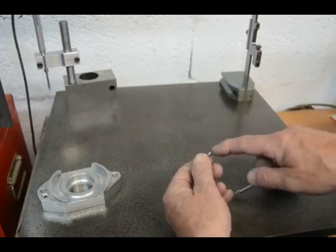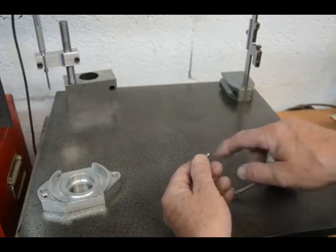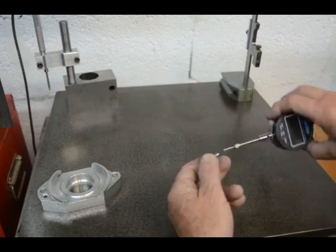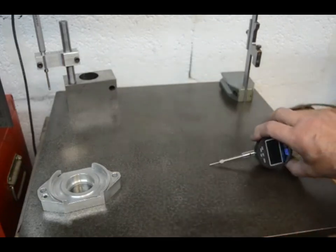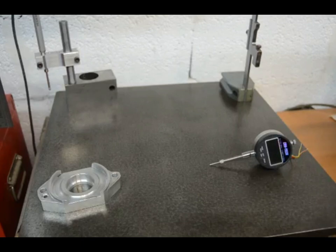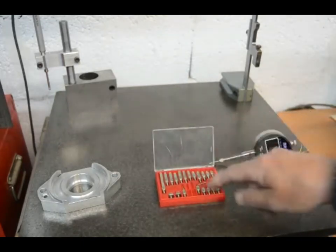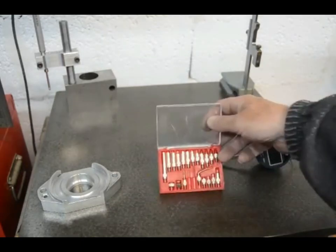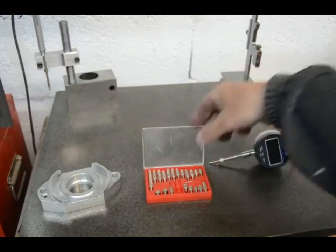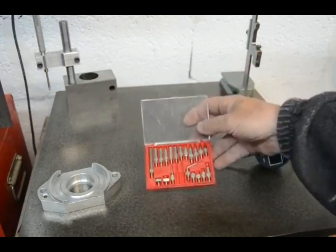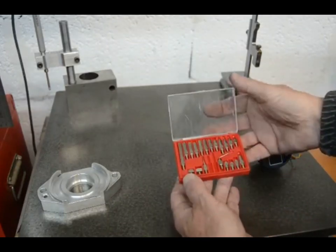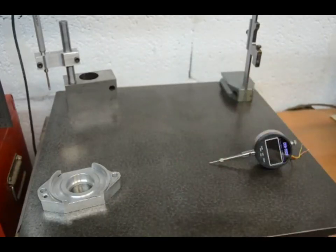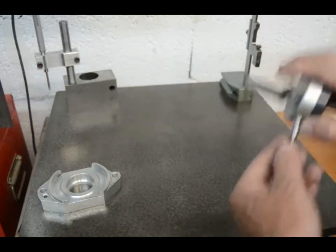First of all, I've swapped out the standard end that you get on most gauges for one with a longer probe. These are readily available in cheap little kits like this which have a variety of different ends, cheap and cheerful, but they are often absolutely invaluable for certain measuring tasks.